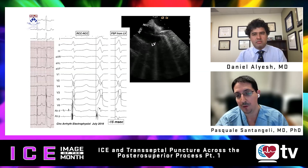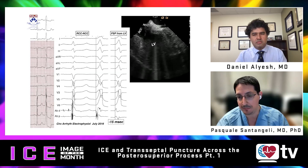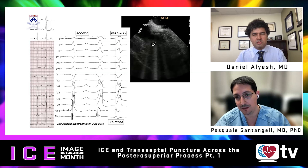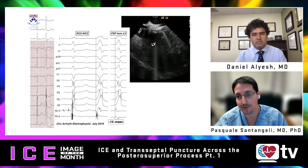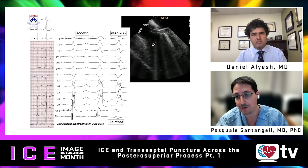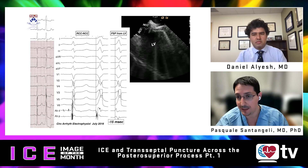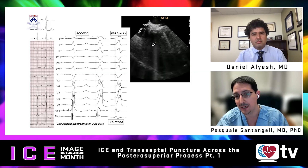Ablation from that endocardial LV site did not result in complete suppression of the PVCs. We always like to work from multiple vantage points, and ICE was very eye-opening here — you can appreciate that directly opposite the catheter is the right atrium, slightly lateral to the ostium of the coronary sinus, in direct contact with the outer portion of the inferior septal process. This area has no epicardial component because the epicardial portion of the inferior septal process is actually the right atrium.